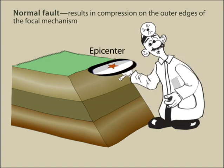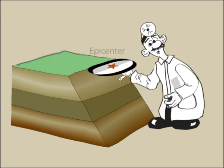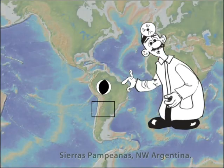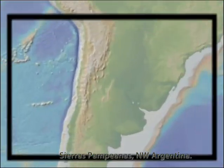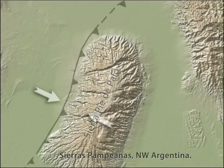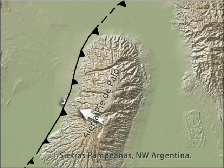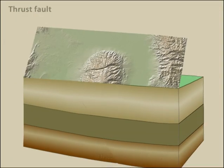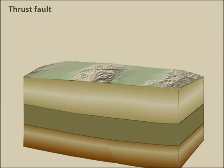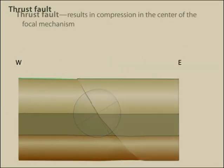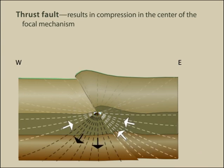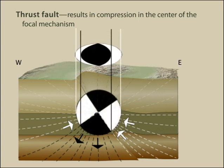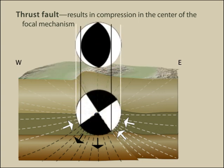Finally, let's consider a thrust fault like that beneath Sierra Pie de Paolo within Sierras Pampeanas of northwest Argentina. This is a west-vergent thrust fault wherein the block on the east moves up and over the block on the west. Viewed in cross section, dilatational first arriving P waves radiate to the east and west from the hypocenter at shallow and intermediate downward angles, whereas the compressional first arriving P waves leave the hypocenter at steep downward angles.